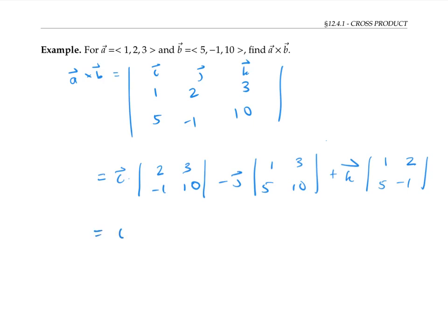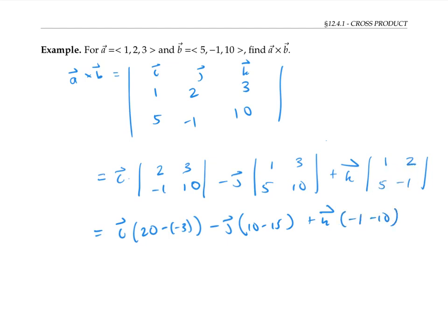Now I'll compute the determinants of the sub-matrices. This is i times (2·10 − (−3)), which is 20 minus negative 3, minus j times (10 − 15), plus k times (−1 − 10). That simplifies to 23i + 5j − 11k. So my cross product vector is given by that answer.